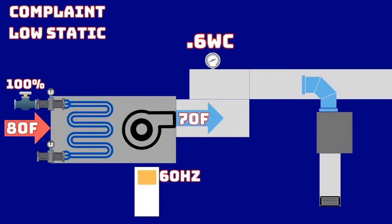Moving too much air processes more sensible load but leaves the latent — in this example the thermostats only control based on sensible temperature, not humidity. The VAVs are open because we can't satisfy setpoint, so we have to keep supplying more cold air to cool the space and allow VAVs to begin closing. Until that happens, the fan can't satisfy static setpoint and begin to back off.